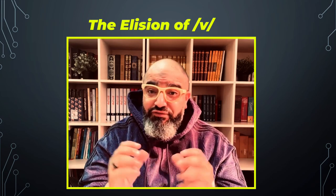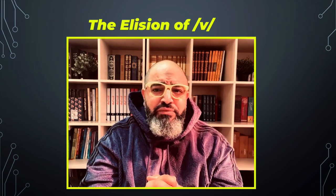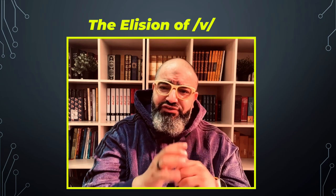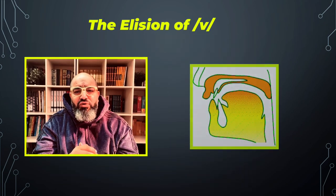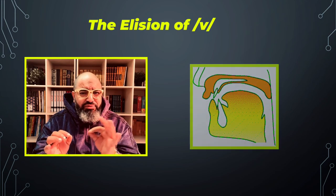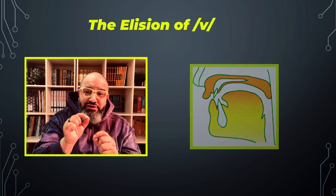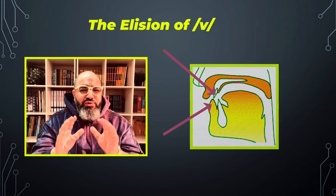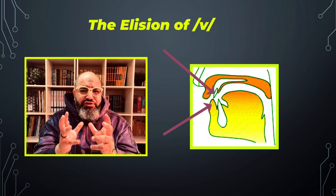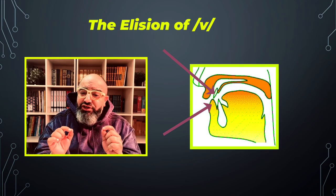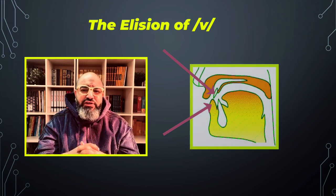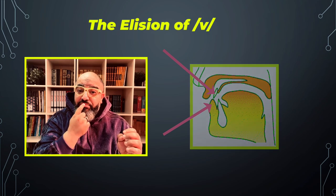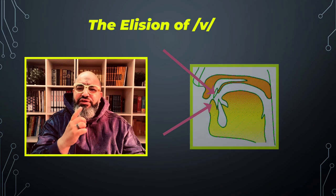Now, back again to the elision of the V sound, which is today's topic. The V sound is a labiodental fricative sound. What does that mean? When I say it's labiodental, I mean that it is pronounced by your lower lip towards your upper teeth. And when we say fricative, we refer to the friction produced by the air trying to leave between the lower lip and the upper teeth.